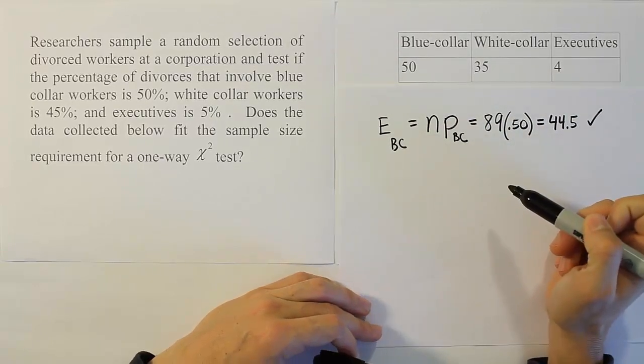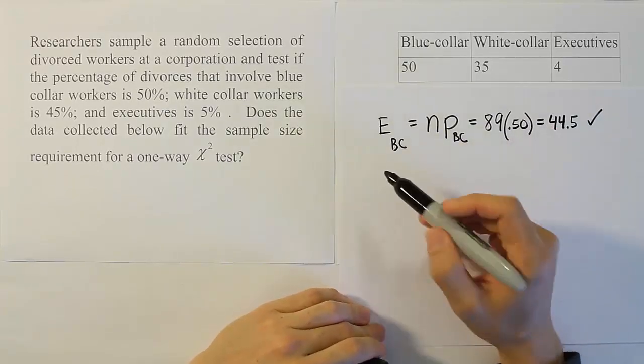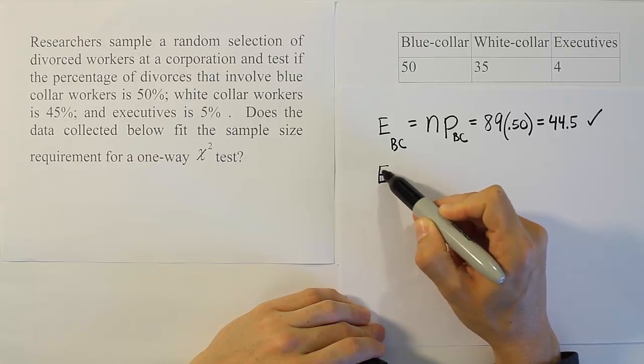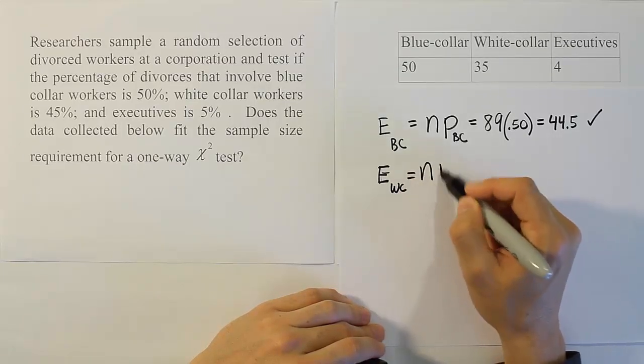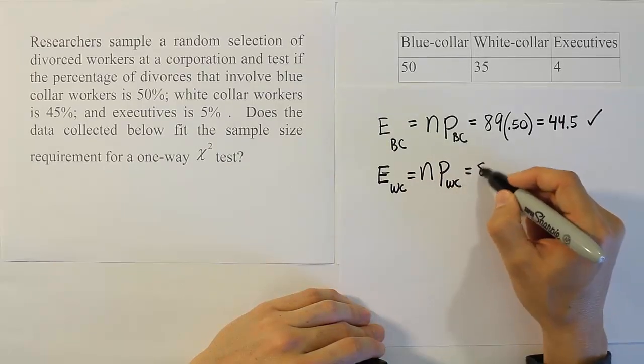From there, what we want to do is look at the next category, the white-collar category. Expected value for the white-collar category is n times the probability for the white-collar category. The n was 89.